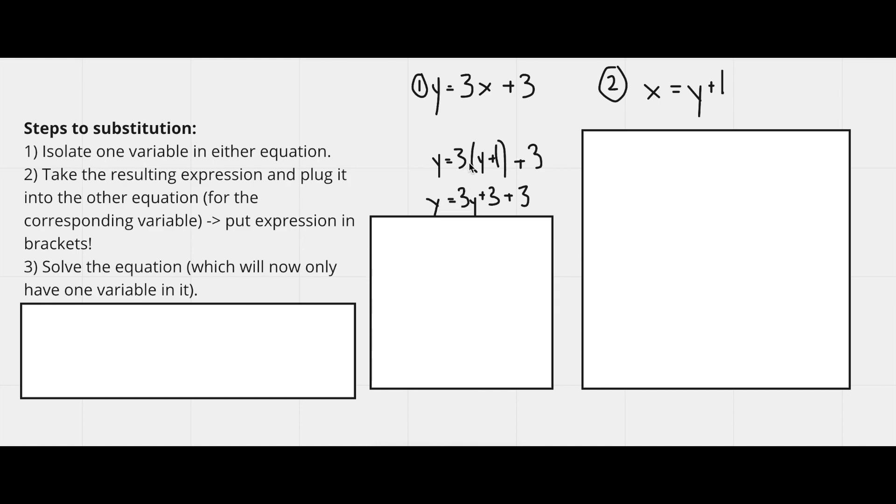we have y equals 3 times y, which gives you 3y, and plus 3 times 1, which is 3. And then we just leave the plus 3 and bring it down on the end.